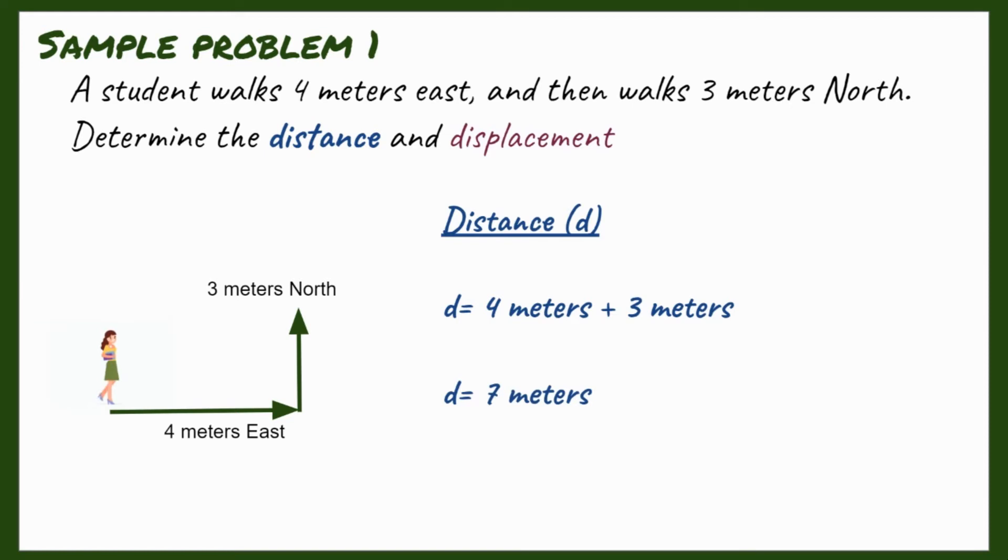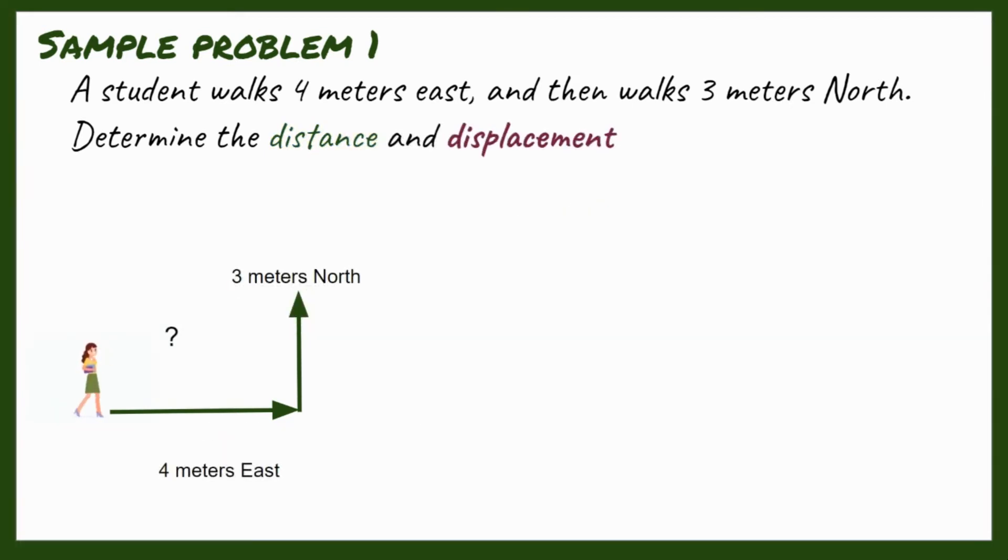Let's proceed to the displacement. Remember, in the sample problem, the student walks 4 meters east and then walks 3 meters north. The displacement is the shortest distance between the point 1 and point 2 or the final point. In the illustration, it is represented by the broken lines. This looks familiar, right? Oh yes, it's a right triangle.